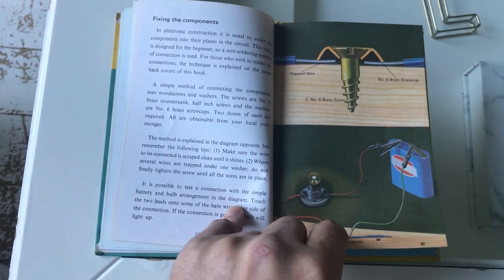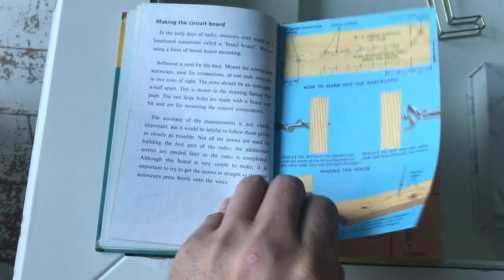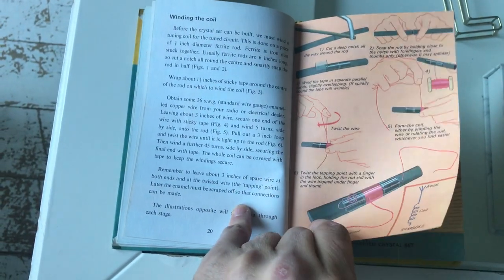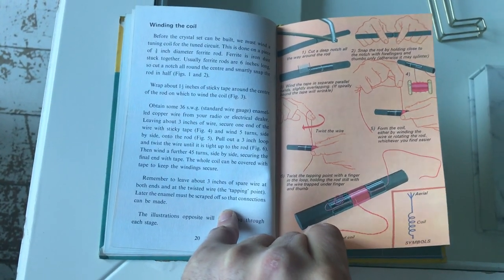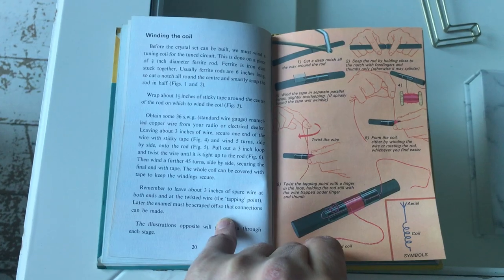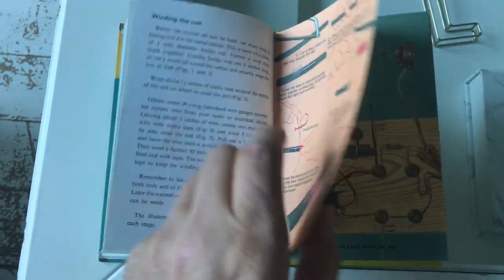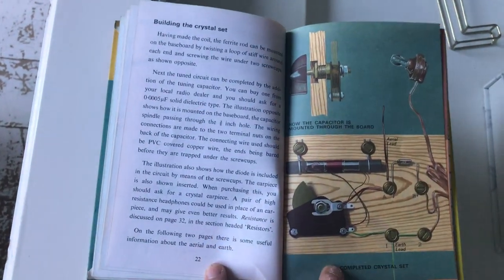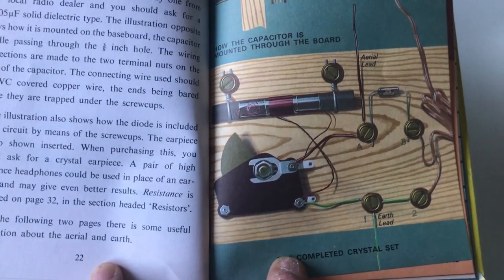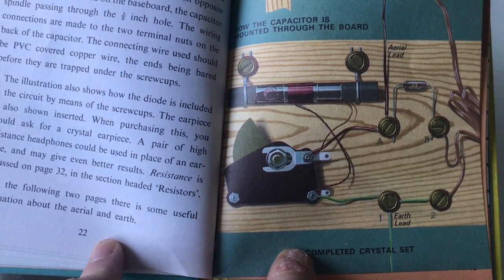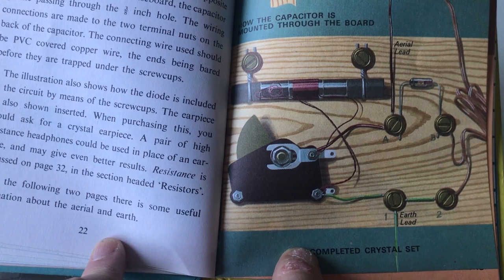How you wind the coil, the 36 standard wire gauge wire on the ferrite rod. It was this that got me - this image. So this is the crystal radio receiver: ferrite rod, open gang tuning capacitor, a diode, and then an earpiece.